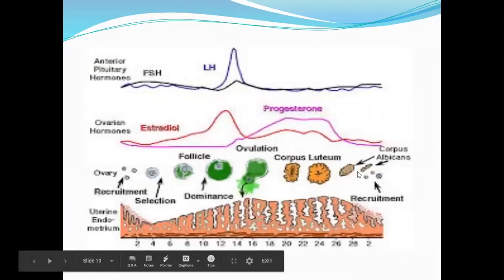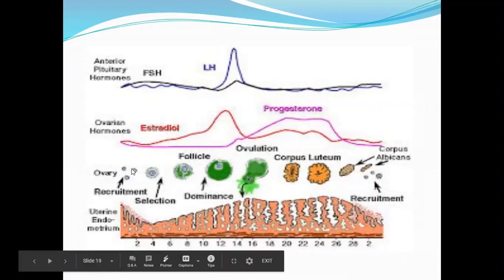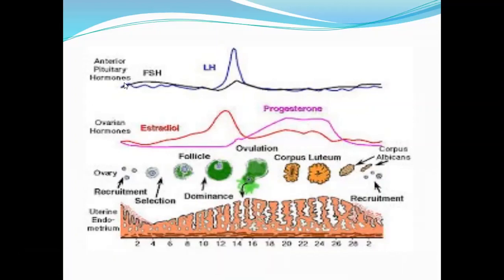This figure shows the hormonal changes during the estrus cycle. On the graph you have FSH and LH, the ovarian hormones estrogen represented by estradiol and progesterone, then what happens in the ovaries and to the follicles under the influence of these hormones, and finally how these hormones influence the endometrial lining. As FSH increases its production, estrogen levels gradually increase as well.